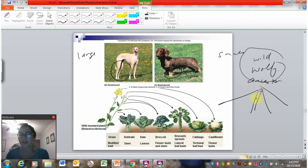And from the wild wolf ancestor, humans have selected all of the different dog breeds. So at two ends of the spectrum, we have the very large dogs and we have small dogs.